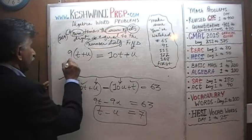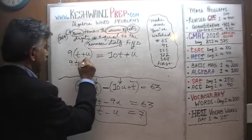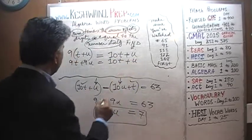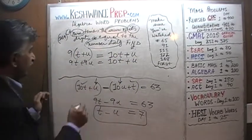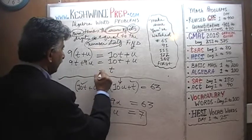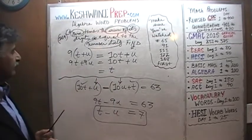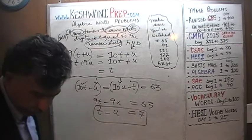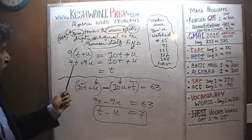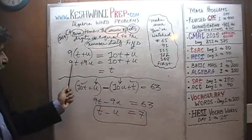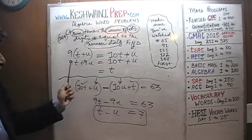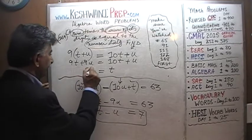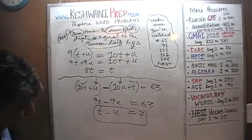Working it out: 9t plus 9u equals 10t plus u. Bringing 9t to the other side: 10t minus 9t is t. Bringing u to the other side: 9u minus u is 8u. So we get t equals 8u. Now we have two independent equations.